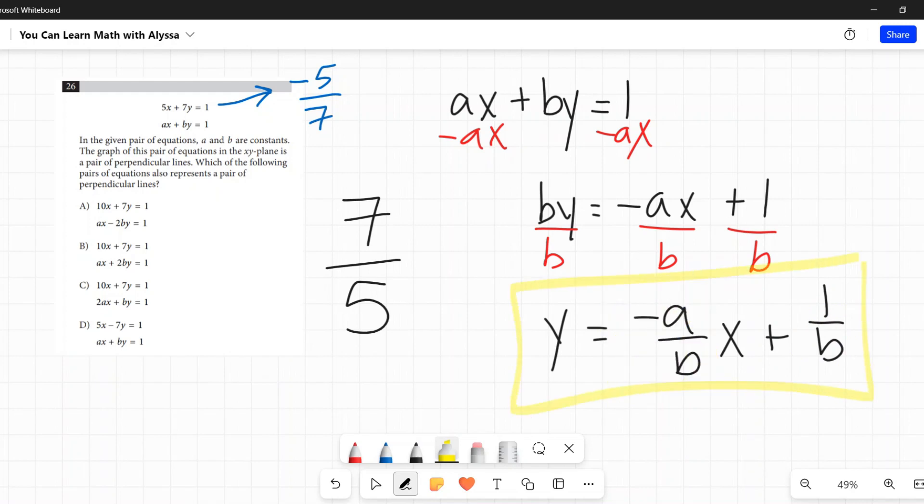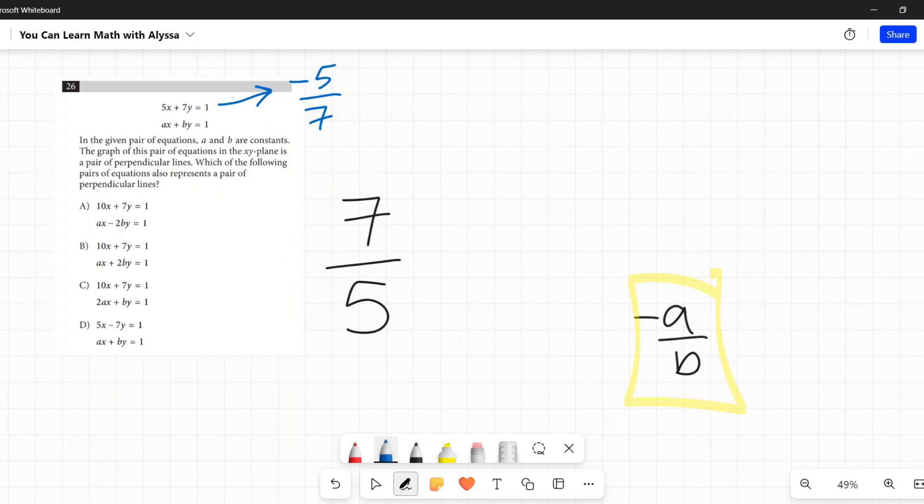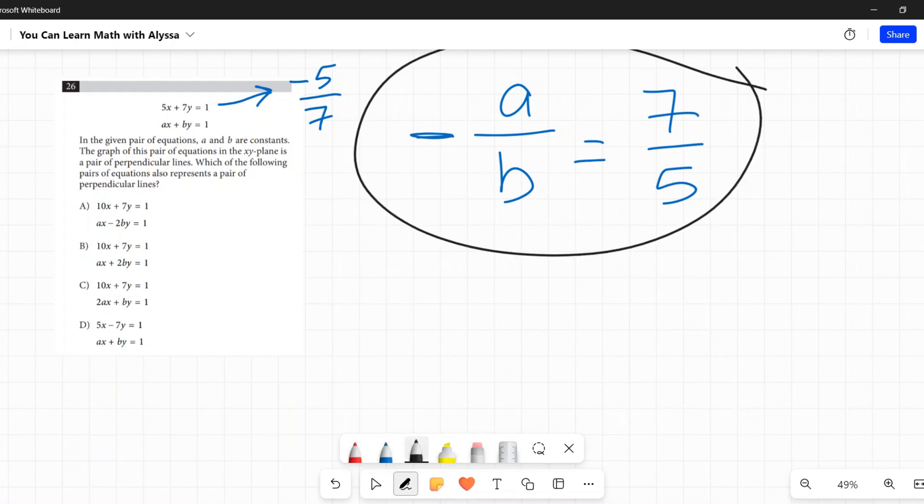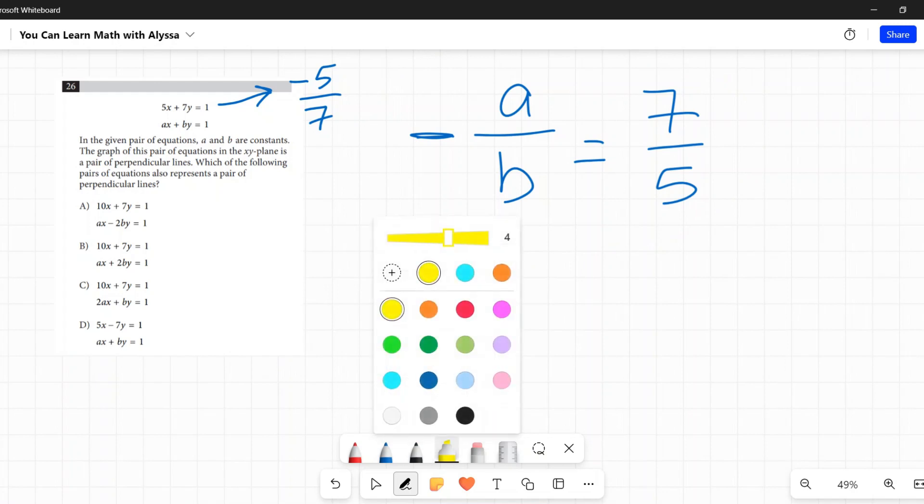And that number out here, this 1 over b, it doesn't really matter. Again, this is what we're concerned with, that slope, negative a over b. Now, this line is perpendicular to the other one. So this slope must be equal to what we said the slope of any line perpendicular to the top line must be. So negative a over b must be equal to 7/5. Now, here's one little thing. I'm going to rewrite this up at the top. So negative a over b must be equal to 7/5.